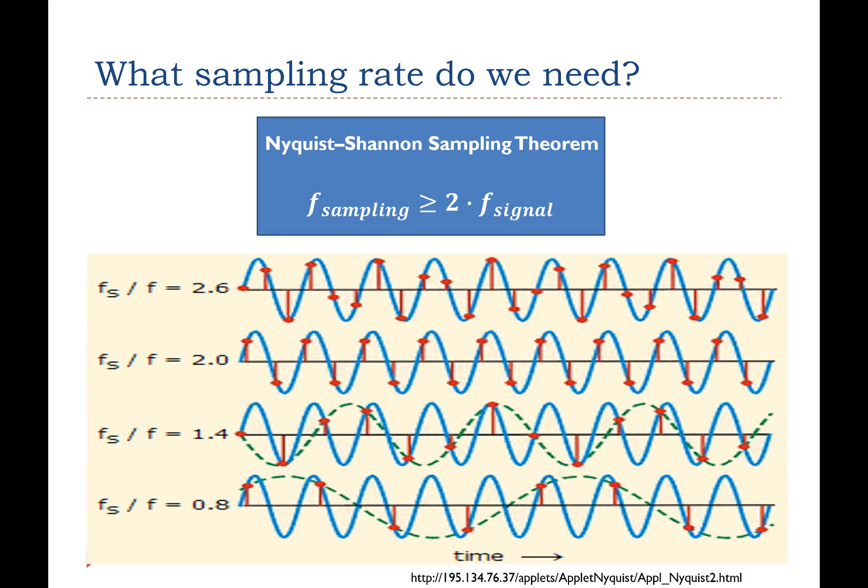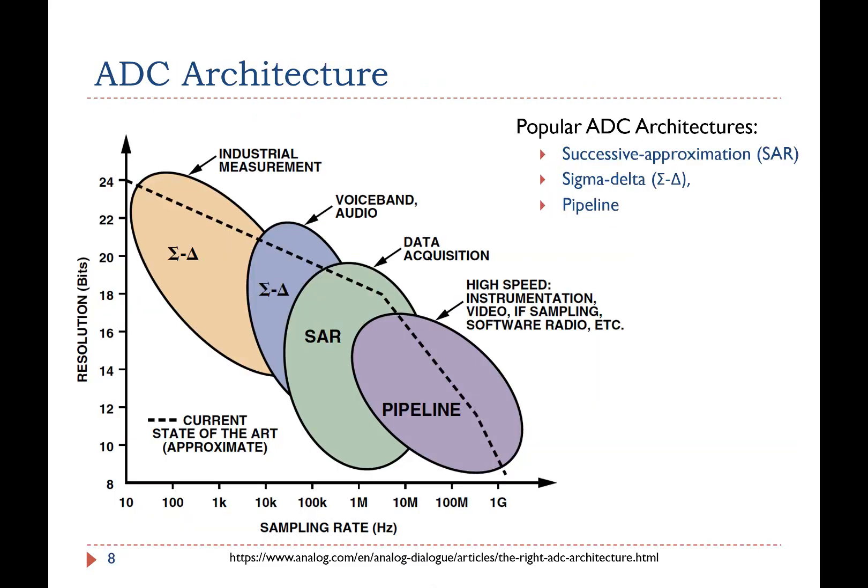In practice, we often use a sampling rate of 5 to 10 times the analog signal frequency. There are three popular ADC architectures in use today, including Successive Approximation SAR, Sigma-Delta, and Pipeline.